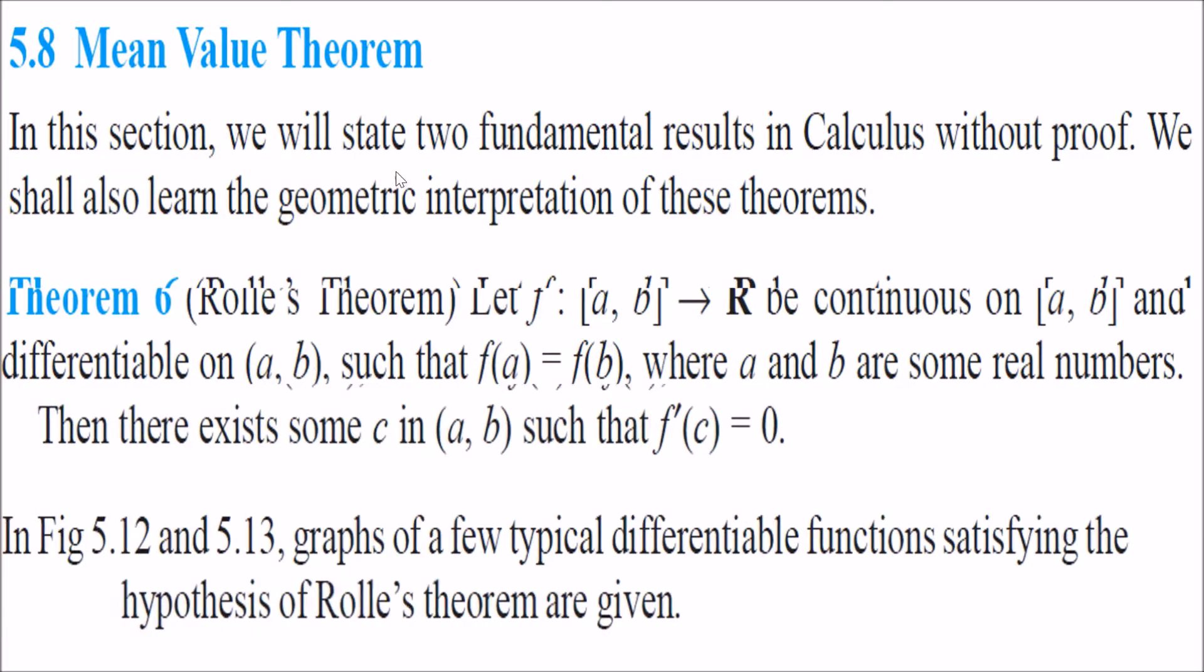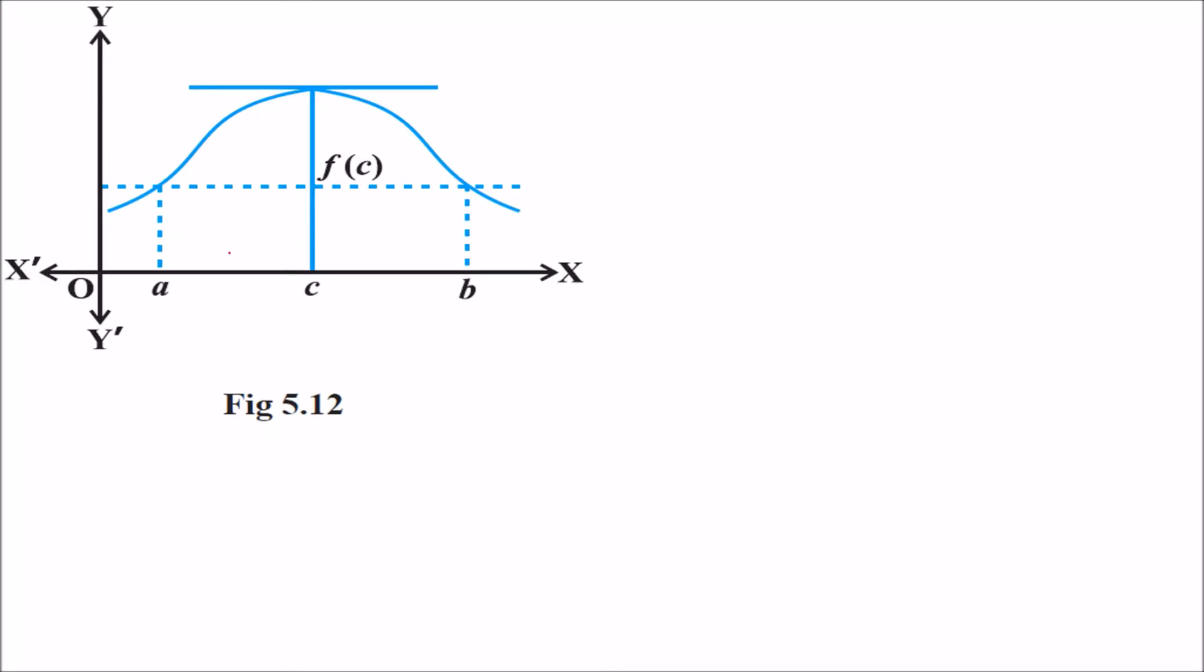I will show you the diagram so that you understand what is happening. This is our function. We are saying this is defined for this domain, a to b. What I am saying here is, between a and b, you ought to have a c such that this f dash c is 0. That is, f dash c is the slope. It is the gradient.